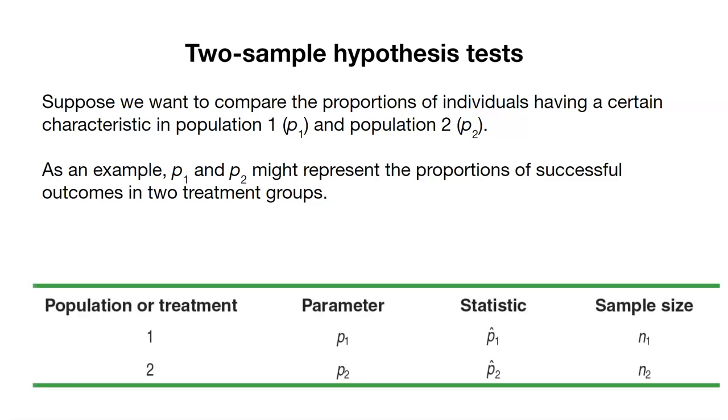We have two different populations, two different parameters P1 and P2, two different statistics P1 hat and P2 hat, and we might even have two different sample sizes.